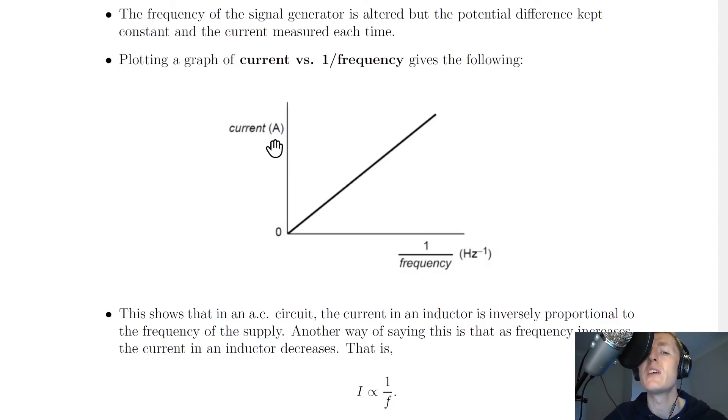However, what's more useful for us to do is to plot a graph of current against 1 over frequency, as this will allow us to see a directly proportional relationship. So plotting this on a graph gives us a directly proportional straight line through the origin, plotting current against 1 divided by frequency.